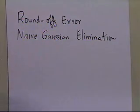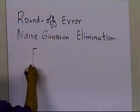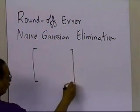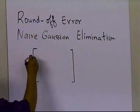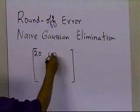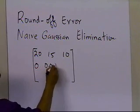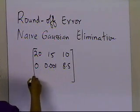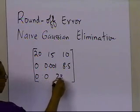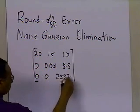So the example which we are doing is that we ended up with this at the end of the forward elimination steps. This is what we got: 20, 15, 10; 0, 0.001, 8.5; 0, 0, 23375.